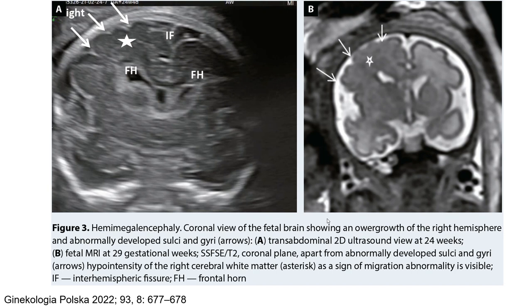This is the case of hemimegalencephaly on ultrasound. The MRI was done after abnormal 2D ultrasound at 24 weeks, and fetal MRI at 29 gestational weeks. The signal intensity of the right cerebral white matter as a sign of migration abnormality is visible. The ultrasound also shows overgrowth of the right hemisphere and abnormal development of sulci and gyri.